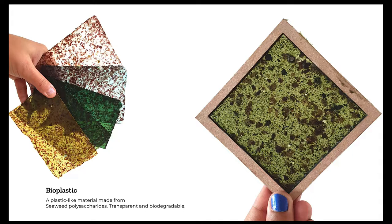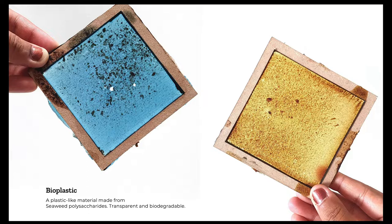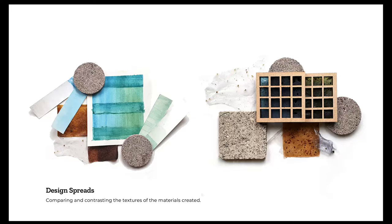Finally, the last material I developed is a bioplastic — using the polysaccharides in algae to create a plastic-like material. This is a more contemporary application that a lot of biodesigners are currently experimenting with in the Netherlands. Where I really tried to push the research forward was by experimenting with different natural colors, especially using spirulina in the mix. I found that by adding about a tablespoon of sugar per base it really stabilized the mix when adding microalgae like spirulina, and that's how you can get these really beautiful blues and greens.